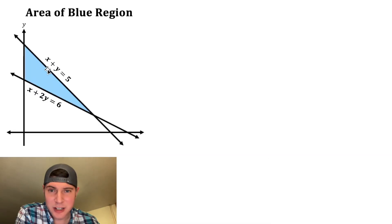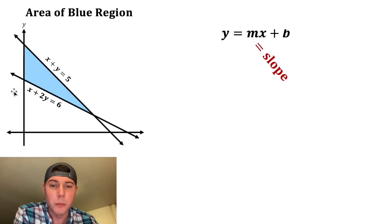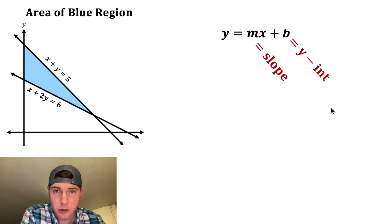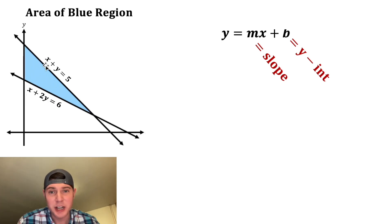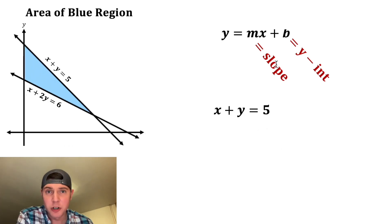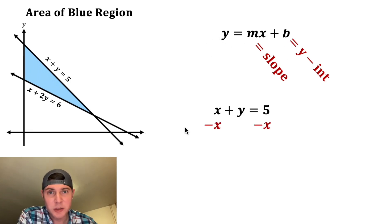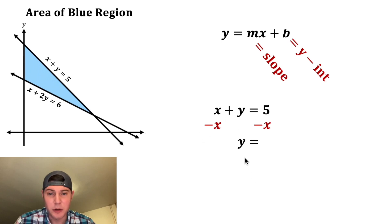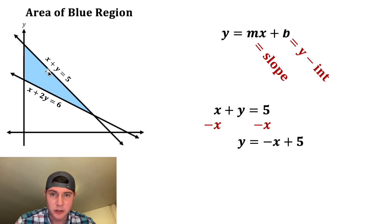The equations of these lines are given to us in standard form. I want to rewrite them as y equals mx plus b, which is known as slope-intercept form because m is the slope of the line and b is the y-intercept of the line. Let's take the first equation x plus y equals 5 and rewrite it in slope-intercept form — we need to get y by itself. So we're going to subtract x from both sides. These x's cancel, so the left-hand side is just y and on the right-hand side we have negative x plus 5. So I'm going to rewrite x plus y equals 5 as y equals negative x plus 5.